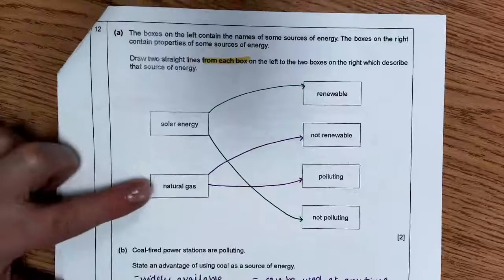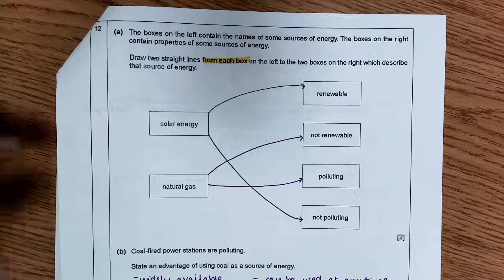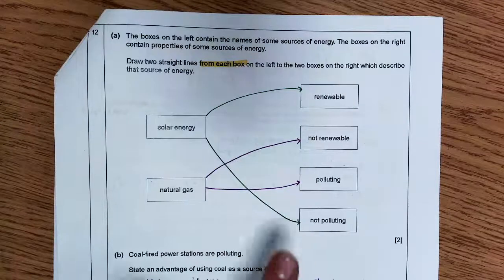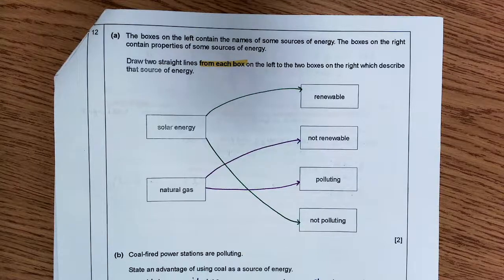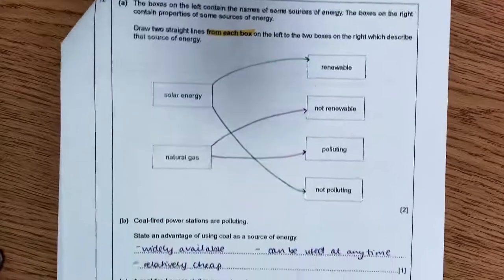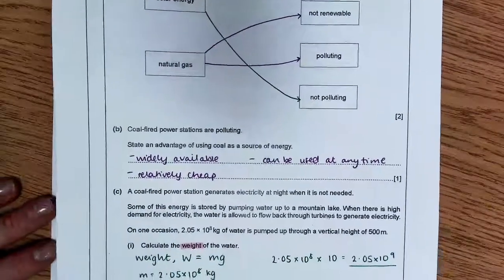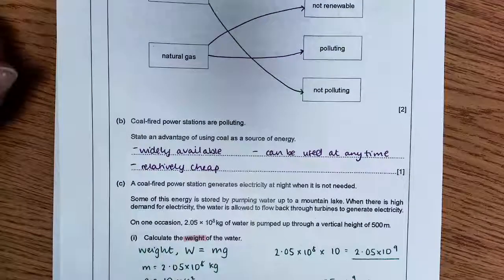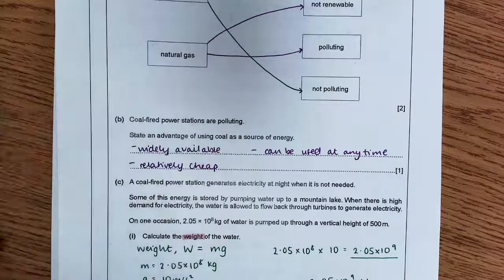Natural gas is gas trapped under the surface that we harness and capture. It's not renewable — once it runs out, we're not getting any more in our lifetime. It is polluting: when we use natural gas we are emitting greenhouse gases into the environment. In part B, it asks you to state an advantage of using coal as a source of energy. You could have said it's widely available at the moment, it's relatively cheap, and it can be used at any time.